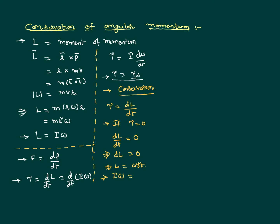We also know that angular momentum is nothing but Iω. So I times ω equals constant, which implies moment of inertia is inversely proportional to angular velocity. This is called conservation of angular momentum, and it means that if by any means you reduce the moment of inertia, the angular velocity of the body increases.